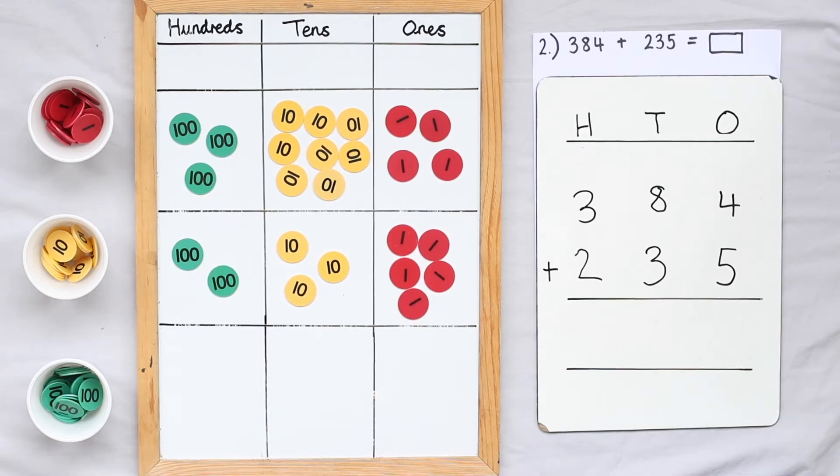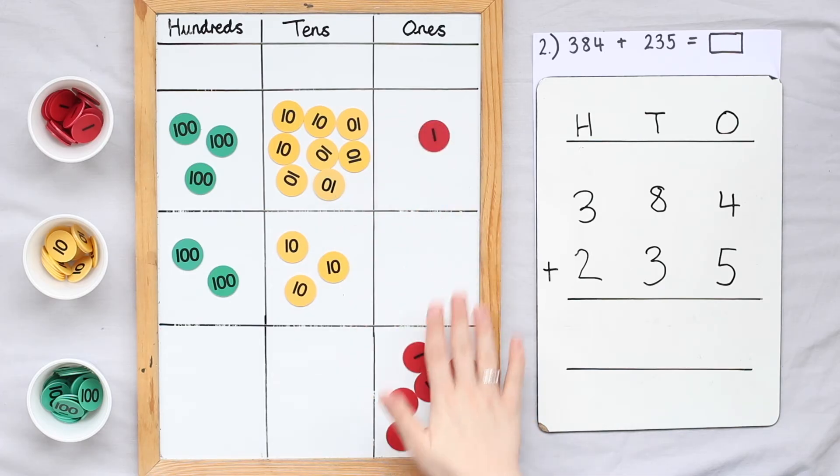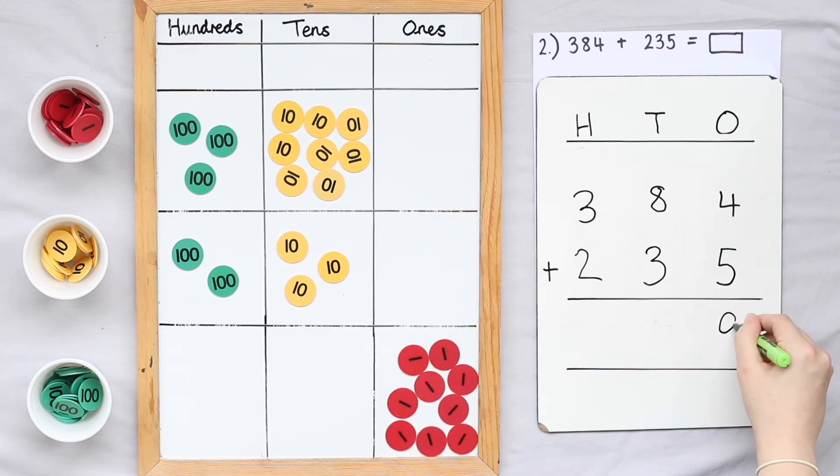Once my algorithm is set out correctly I can begin calculating. In the column method we always start from the right hand side. So starting at the ones column I'm going to add four ones and five ones. This equals nine ones.